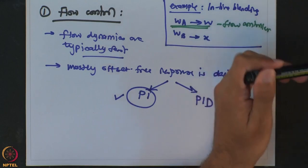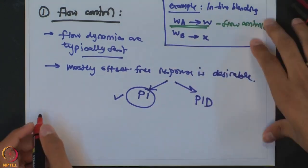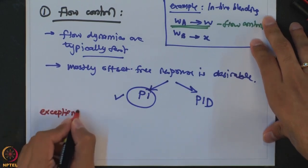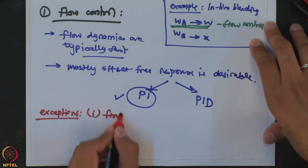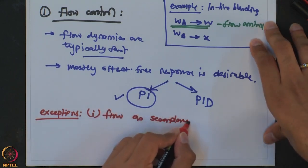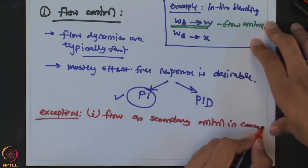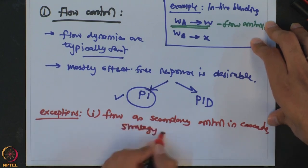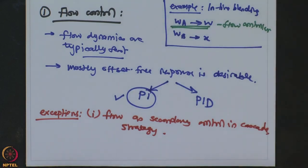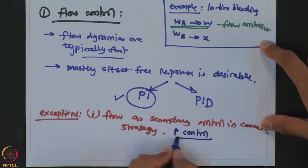Now there are two exceptions to this rule. The first is flow as a secondary control objective in a cascade strategy. We have not yet seen what cascade control is, but it is a control strategy where two control loops are connected together — one is a primary control loop and the other is a secondary control loop. When flow is part of this secondary control loop, offset is not that critical and is tolerable. So in such a case, in order to improve the speed of response, you may have flow as a proportional controller.